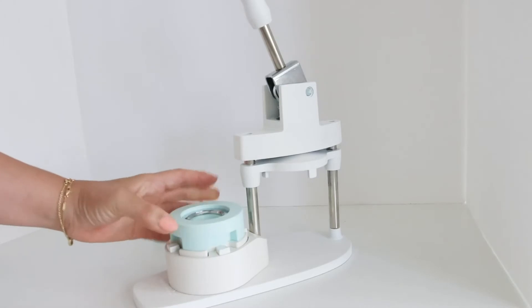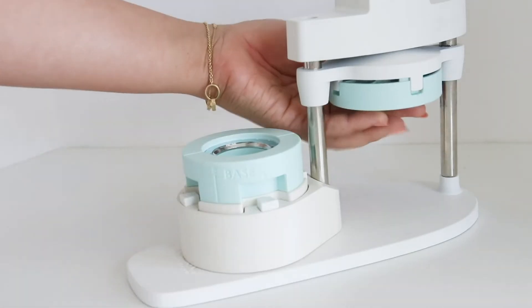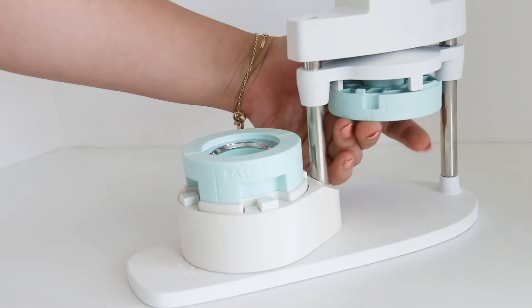Once you have your image cut, you can interchange the base and top inserts for the buttons. First line up the arrows to where it says A on both the base and top.